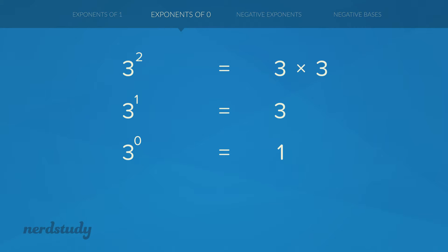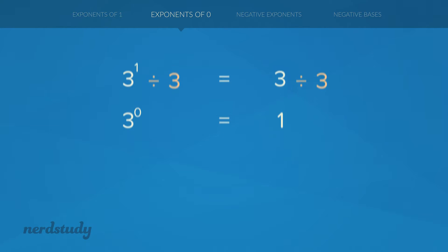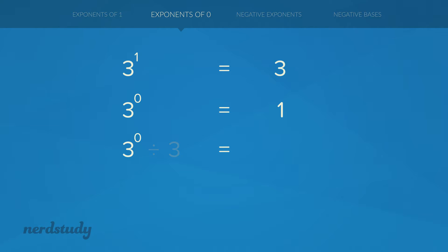So you can see how much this chart is helping us understand exponents. When you keep dividing both sides by 3, you eventually reach 3 to the exponent 1, which equals 3, and then 3 to the exponent 0, which equals 1. Instead of stopping there, why don't we divide both sides by 3 one more time? We get 3 to the exponent 0 divided by 3, which is the same as dividing by 3 to the exponent 1. Using the quotient rule: 3 to the exponent 0 minus 1, which is 3 to the exponent negative 1. This is the first time we see a negative exponent!